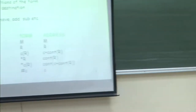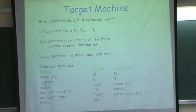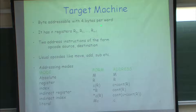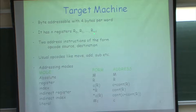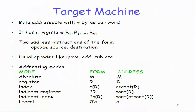Let us assume a target machine to work with concrete examples. We assume a byte-addressable machine where 4 bytes form a word, with a sequence of registers R0 to Rn-1 — depending on the machine you may have 8, 16, 32, or more registers. We assume 2-address instructions of the form: opcode source destination, so one of the operands is also the target of the instruction — unlike 3-address machines with separate op1, op2, destination.